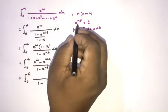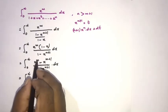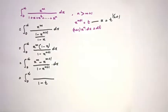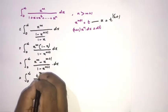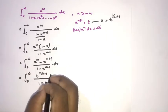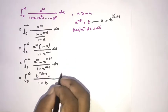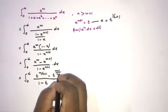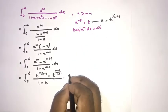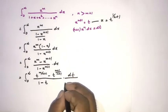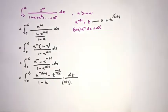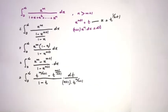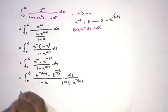In the denominator we have 1 minus x to the N+1, which is 1 minus t. For x to the M: since x = t to the 1/(N+1), we get t to the M/(N+1). For dx: dx = dt over (N+1) times x to the N, where x to the N = t to the N/(N+1).